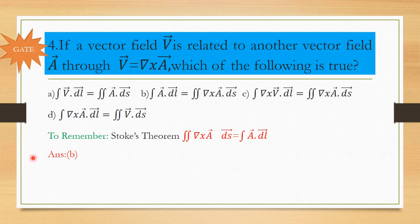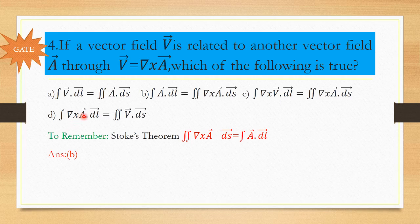Next problem: If a vector field V⃗ is related to another vector field A⃗ through V⃗ = ∇ × A⃗, which of the following is true? Option A: ∮V⃗·dL⃗ = ∬A⃗·dS⃗. Option B: ∮A⃗·dL⃗ = ∬(∇×A⃗)·dS⃗. Option C: ∮(∇×V⃗)·dL⃗ = ∬(∇×A⃗)·dS⃗. Option D: ∮(∇×A⃗)·dL⃗ = ∬V⃗·dS⃗.